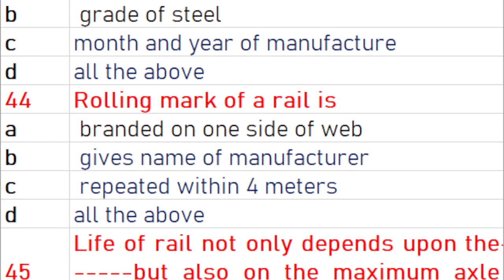The rolling mark of a rail is all of the above: branded on one side of the web, gives the name of the manufacturer, and is repeated within 4 meters.